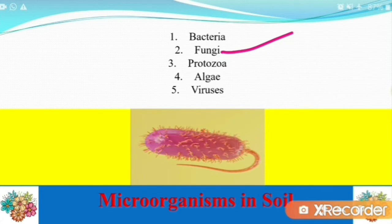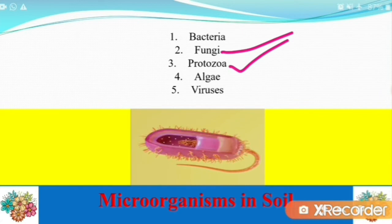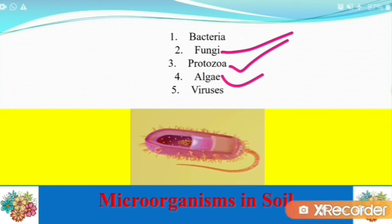Next is protozoa. Many types of protozoa are found in the soil, but flagellates and amoebae usually outnumber ciliates. The total numbers may range from a few hundred to several thousands.